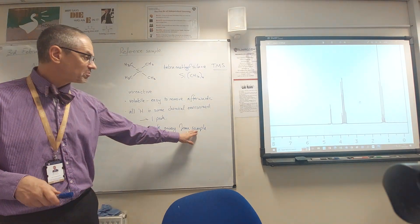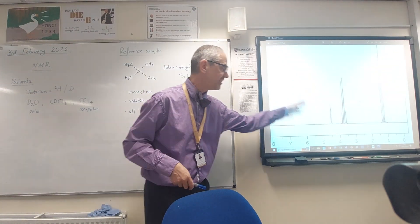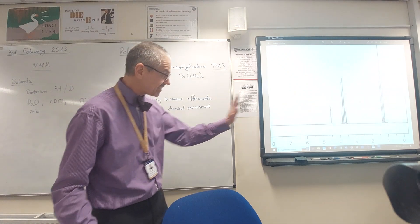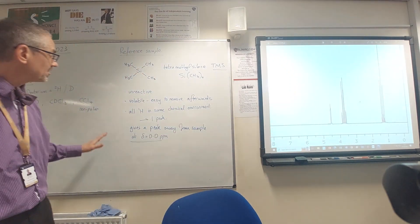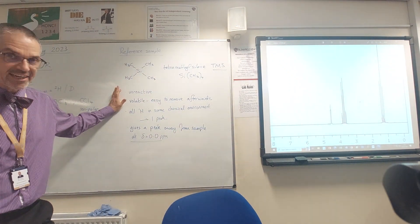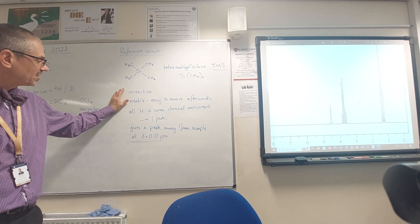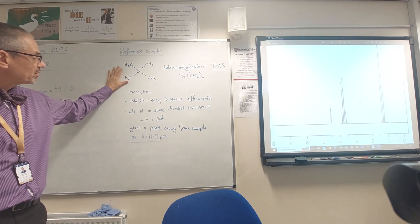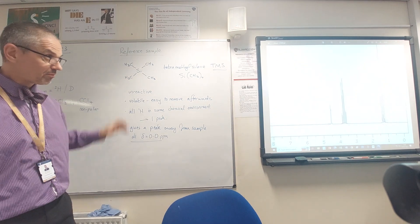Sorry when I say from sample I mean the thing we're testing. In this case it was ethanol wasn't it. So it gives us a peak at zero well away from everything else. It's easy to remove and it's unreactive so it's not going to spoil our sample by reacting in some hideous way. And because all the protons are in the same chemical environment it'll just give us one peak.